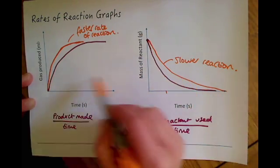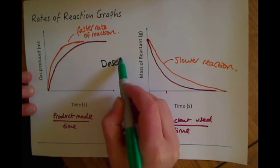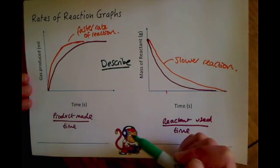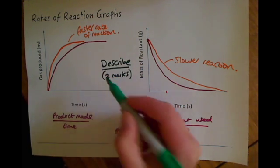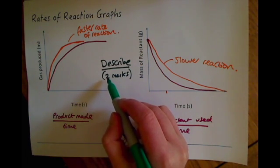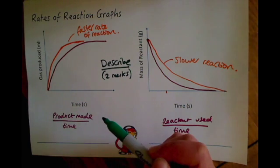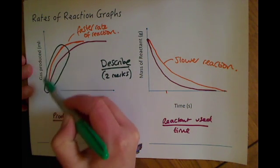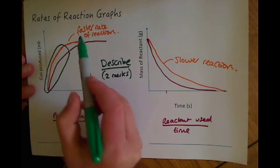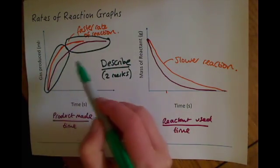That's one thing you might be asked to do — draw a faster or slower reaction on these graphs. The second skill you need throughout the whole test is to describe the shape of the graphs. This will often be worth two or three marks. What you need to do is look for two different sections on the graph — draw circles on your graph to break it down into those sections.